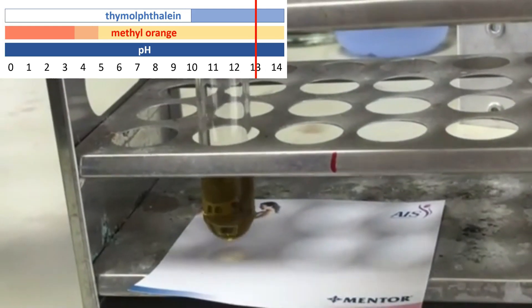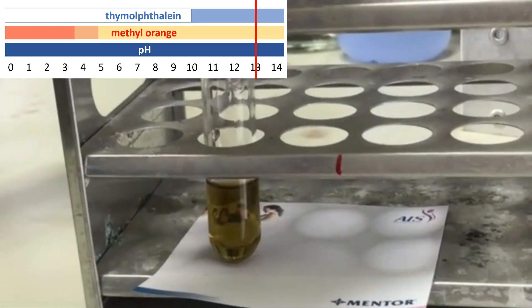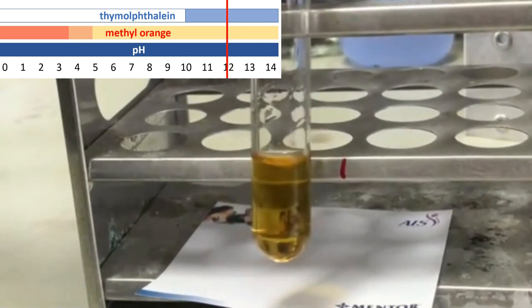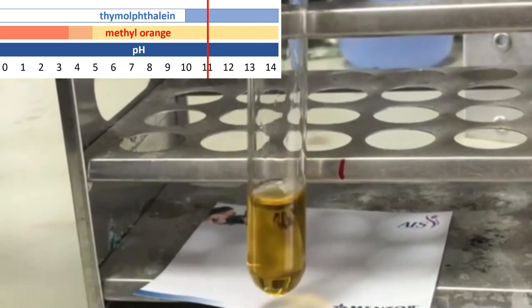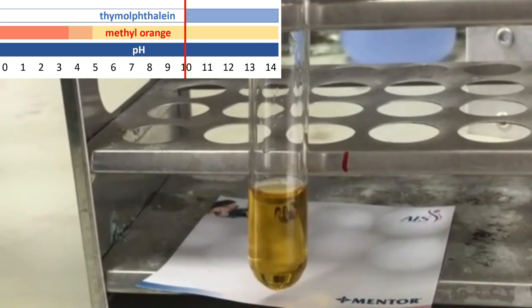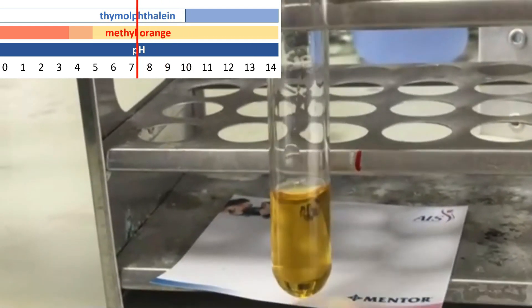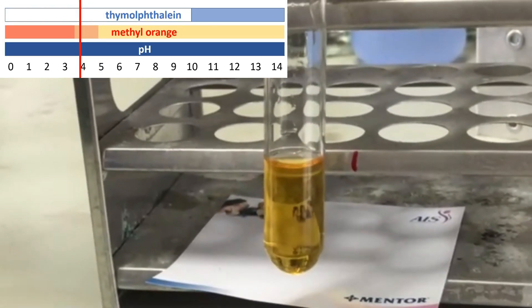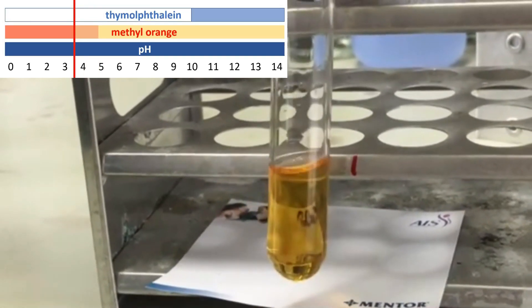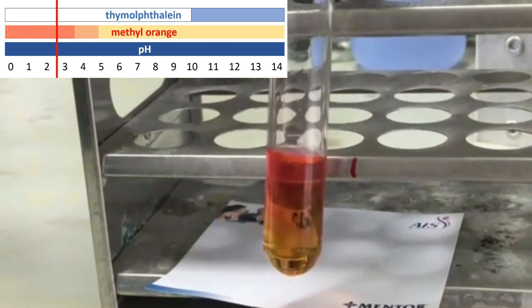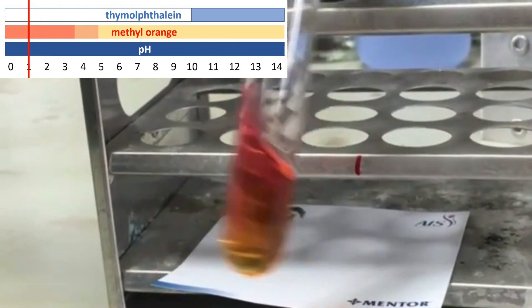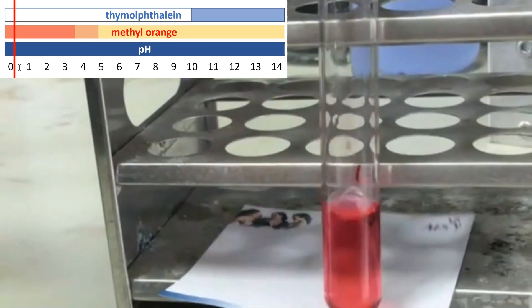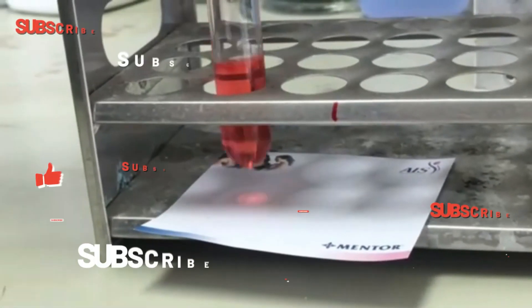As nitric acid is added, the solution begins to turn to yellow, and then orange, and finally red or pink.